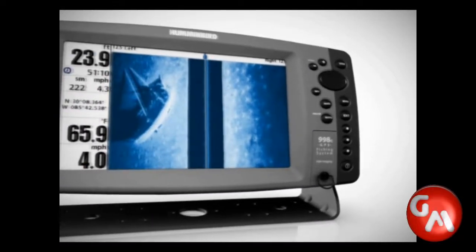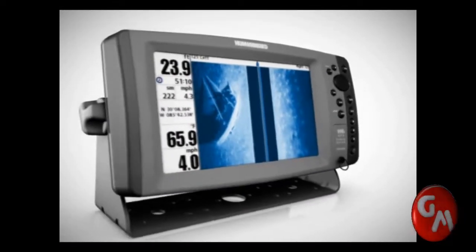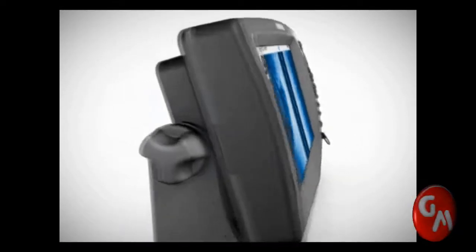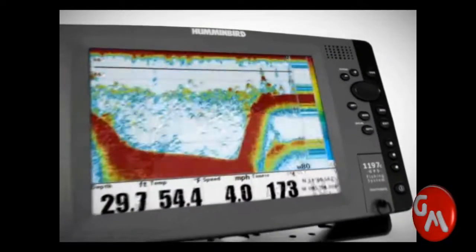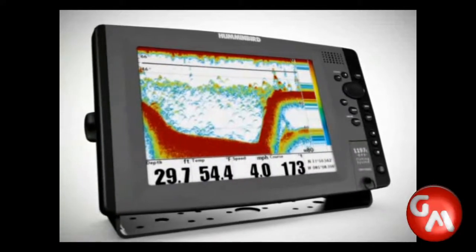Humminbird fishing systems use sonar technology to help anglers locate and catch more fish. Whether using exclusive Humminbird side imaging, down imaging, or switchfire sonar, the principles remain the same.